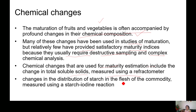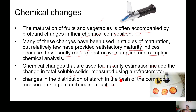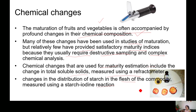Changes in the distribution of starch in the flesh of the commodity are measured using the starch-iodine reaction. The refractometer is very useful — for example, for the apple, every stage the iodine test shows a different pattern. Immature apples show darker zones, and then as starch gets converted into sugar, iodine can only form a complex with starch, giving a blue color.